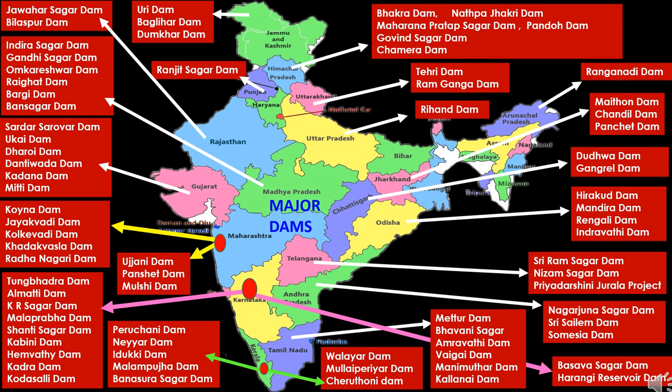In Tamil Nadu, first is Mettur Dam, built on the Kaveri River in Salem district. Second is Bhavanisagar Dam, built across the Bhavani River in Erode district. Next is Amaravati Dam, built on the Amaravati River in Tirupur district. Next is Vaigai Dam, constructed across the Vaigai River in Theni district. Next is Manimuthar Dam, located in Tirunelveli. Next is Kallanai Dam, built on the Kaveri River in Thanjavur district.